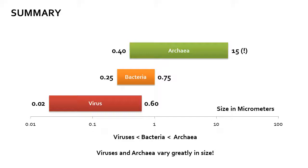Bacteria can be filtered by a 0.1 and 0.2 micron filter, while effective viral filtration requires at least 10 times smaller filters than that.